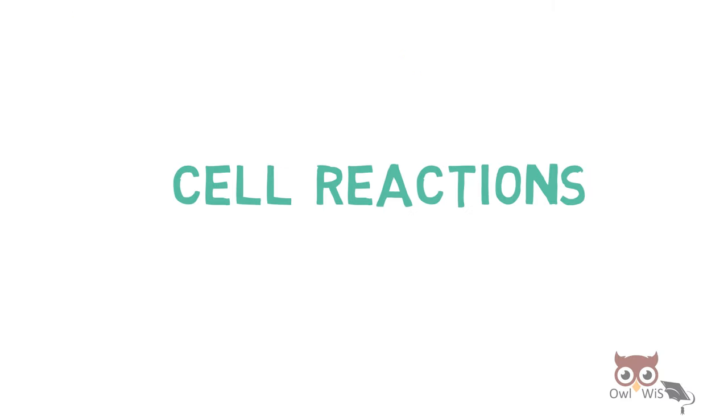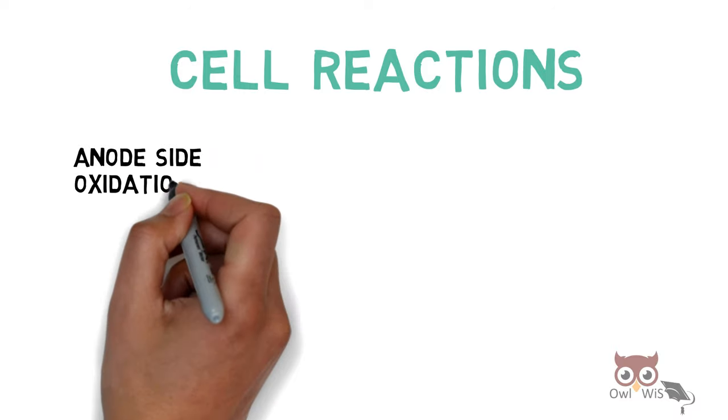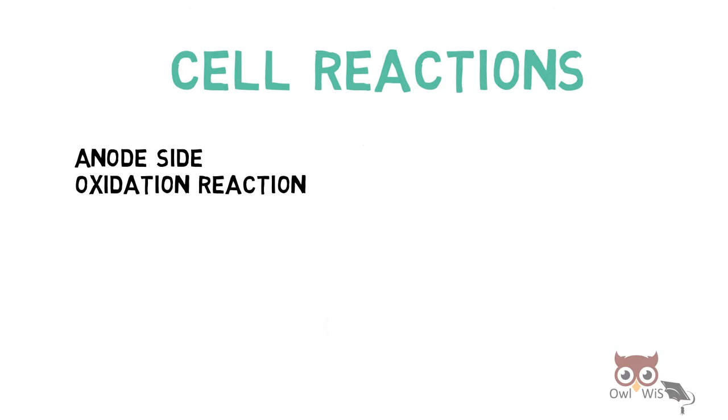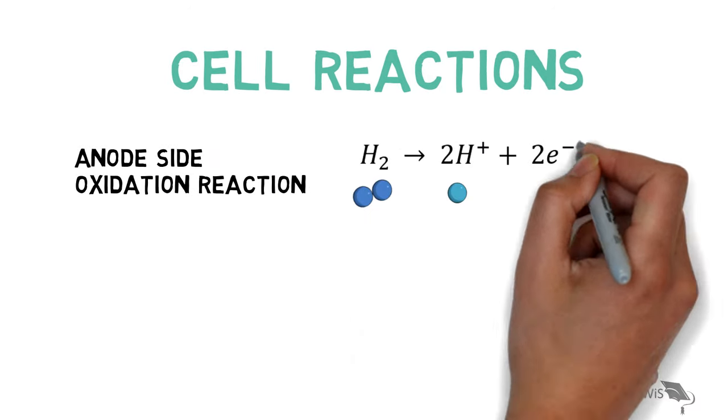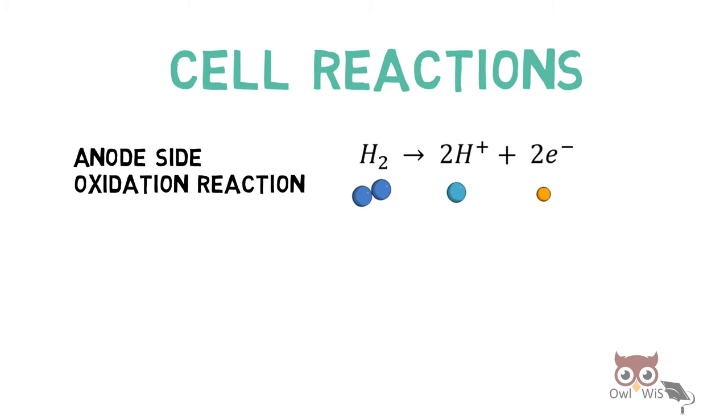Let us understand the cell reactions. At the anode side, oxidation reaction occurs, that is, H2 splits up into two protons and two electrons.